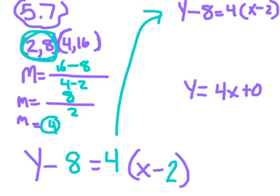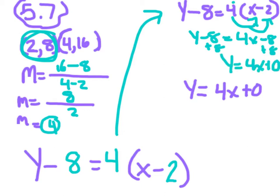So now we're just going to hop over here. We need to solve this, so do the distributive property. So y minus 8 equals 4x minus 8. Add 8 on both sides. And you get y equals 4x plus 0, which is what we've got right there.